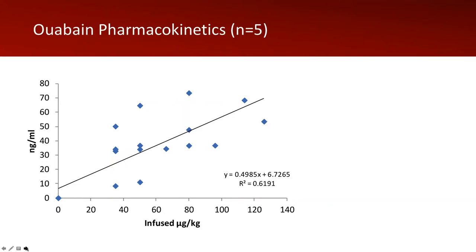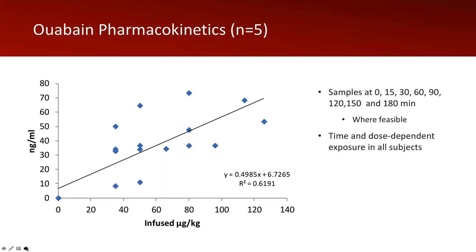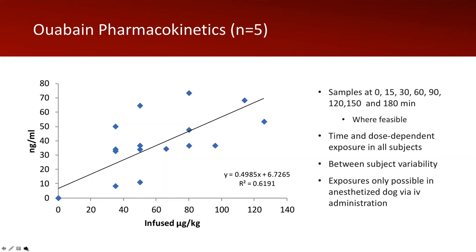The Wabane pharmacokinetics showed Wabane plasma concentration in nanograms per mL versus infused dose in micrograms per kilogram is generally linear, with samples taken as specified. There was a tightly correlated time and dose-dependent exposure in all subjects. However, there was between-subject variability accounting for scatter in the summary graph. The exposures achieved are only possible in the anesthetized dog via IV administration, since oral administration would result in intractable emesis.